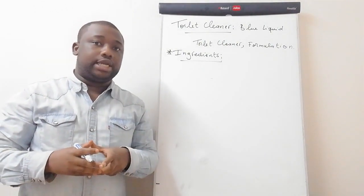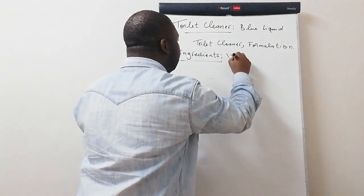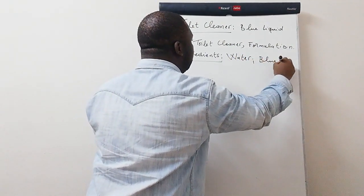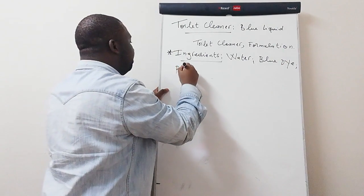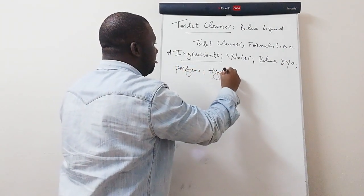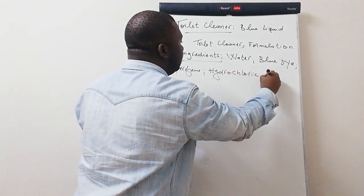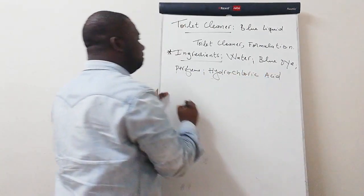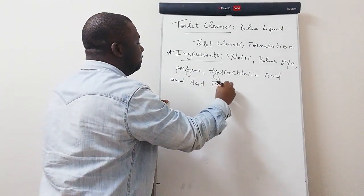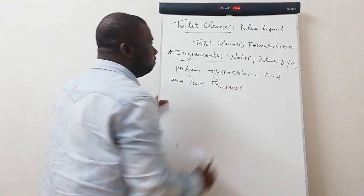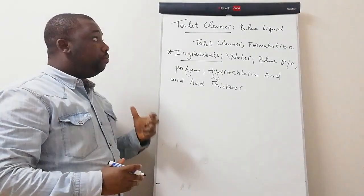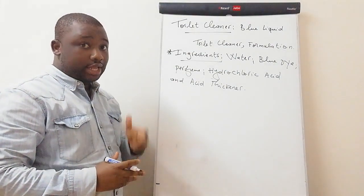So we have water, the blue dye, perfume, hydrochloric acid, and the acid thickener. These are the ingredients that you need to produce your blue liquid toilet cleaner.